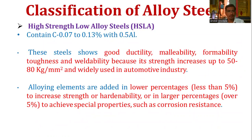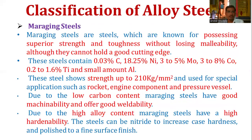The next classification is high strength low alloy steel, or HSLA steel. It contains 0.07 to 0.13 percent carbon with up to five percent alloying elements. This steel shows good ductility, malleability, formability, toughness, and weldability, with strength up to 50 to 80 kg per mm squared. It is widely used in the automotive industry. Alloying elements are added in lower percentages (less than 5 percent) to increase strength or hardenability, or in larger percentages to achieve special properties such as corrosion resistance.